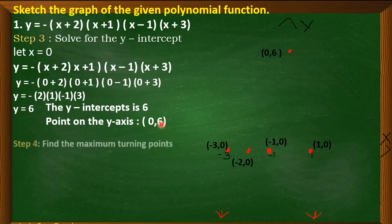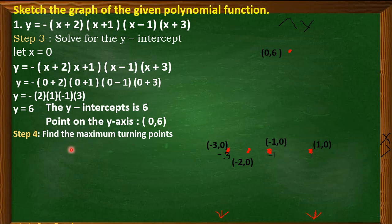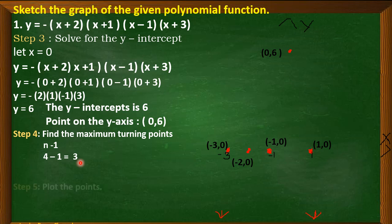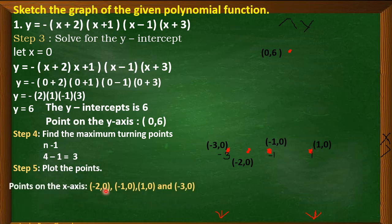Next, find the maximum number of turning points using the formula: at most n − 1. Since our degree is 4, the maximum number of turning points is 3. Now for step 4: plot the points. We plot the x-intercept points on the x-axis and the y-intercept point (0, 6), and draw the Cartesian coordinate plane.